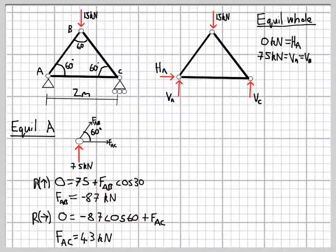If we work that through, then we get the force in AC as 4.3 kN. It's a positive number, which means the force is a tensile force. So we've worked out the forces in member AB and AC now.